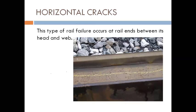Next are horizontal cracks. This type of rail failure occurs at rail ends, at the junction where the head and the web meet — that is, just below the rail head where the head meets the web.